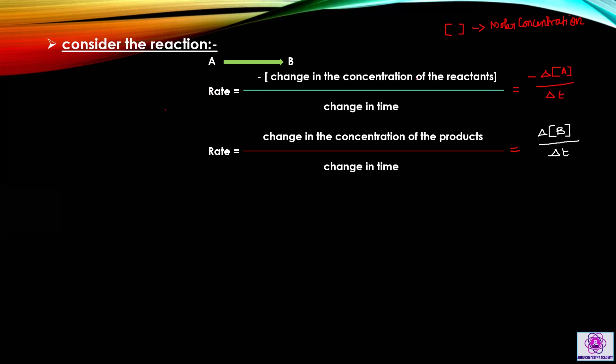Now, the rate of the reaction with respect to B — that is the product. Rate is equal to the change in the concentration of the product by change in time. In this case, you see a positive sign. The expression is plus delta [B] by delta T. Time increases with increasing concentration of the product.